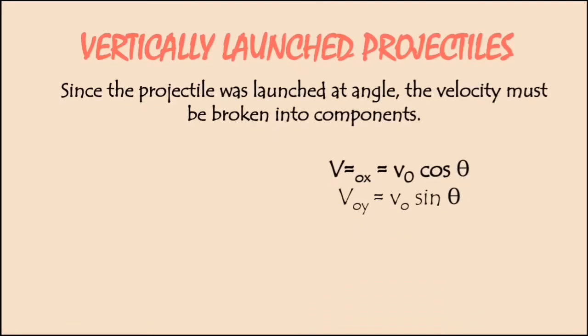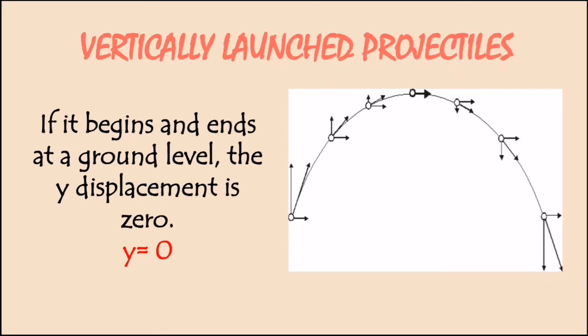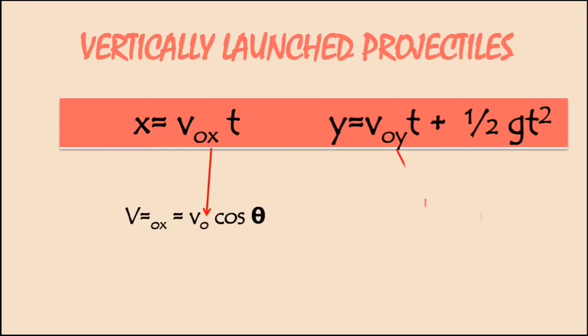Since the projectile was launched at an angle, the velocity must be broken into components. We're going to use cosine theta and sine theta to be multiplied into velocity, depending on whether it is horizontal or vertical. If it begins and ends at ground level, the y displacement is zero. For the horizontal part, we're going to use velocity times cosine theta. And in the vertical component, velocity times sine theta.